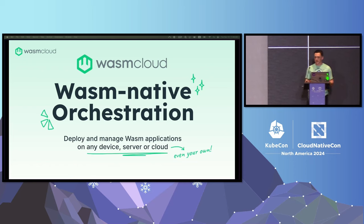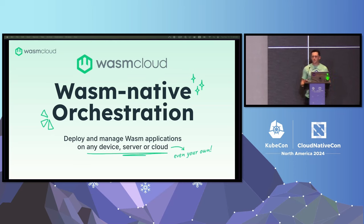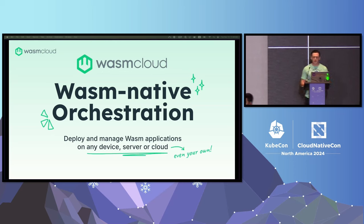Containers need container-native platforms like Kubernetes and Nomad to run efficiently at scale, and WebAssembly is no different. wasmCloud is like the Kubernetes for WebAssembly. It has key benefits in building, composing, and orchestrating distributed applications.